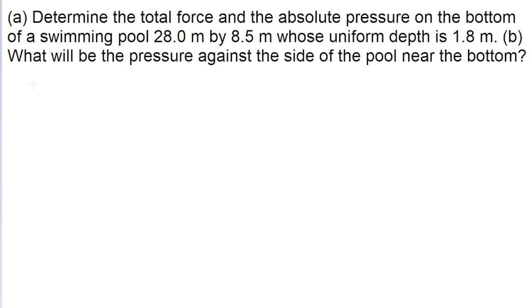Now first off, recall that the force due to a pressure is equal to the magnitude of that pressure multiplied by the surface area over which it acts. In the case of our problem, that area is going to be the area of the pool, and that pressure is going to be the absolute pressure. So even though part A is asking us to find two different things at once, we need to find the pressure first.